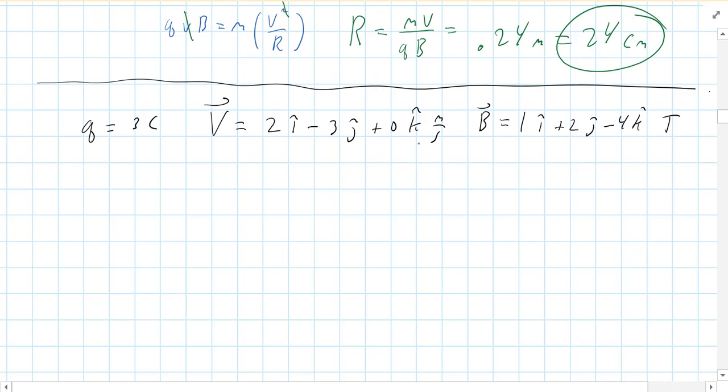So let's find the force acting on the particle. Well, force is equal to QV cross B. So what I'm going to do is I'm going to do V cross B first, and then I'll multiply that answer by 3 to get our force.